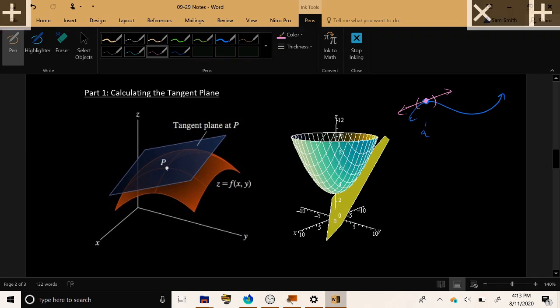and roughly speaking, has the same slope or slant as our function's graph does. So if I look in the x direction, the slope in the x direction should closely match the slope of the function, and the slope in the y direction should match the slope of the function.